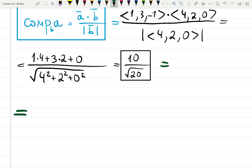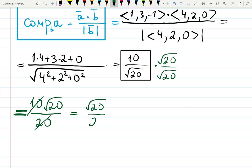To rationalize the denominator you need to multiply both numerator and denominator by the square root, in this case square root of 20. Then you will have 10 square root of 20 over 20, because square root times square root gives you no square root. 10 over 20 is just one half, so it's going to be square root of 20 over 2.